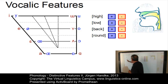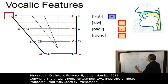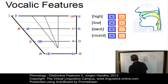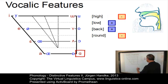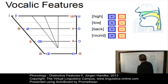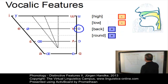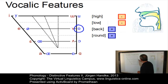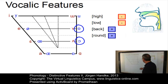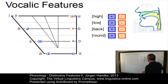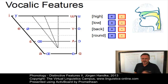Let us look at some selected vowels. Cardinal number one would be defined as plus high, minus low, minus back and minus round. Cardinal number five [a] would be defined as minus high, plus low, it is a back vowel so plus back, and minus round. And if we take [o], cardinal number seven, we would get a vowel which is minus high and minus low, it is a back vowel and it is produced with rounded lips. Now the same applies to cardinal six — it is also minus high, minus low, plus back and plus round. So how do we distinguish these two from one another?